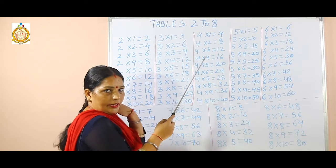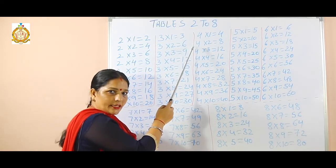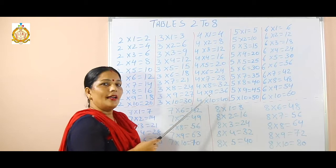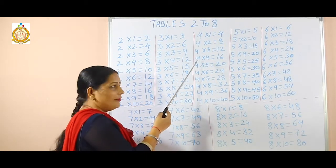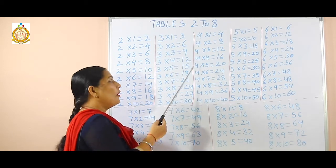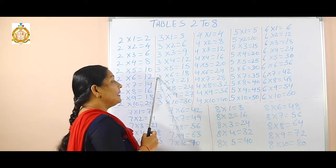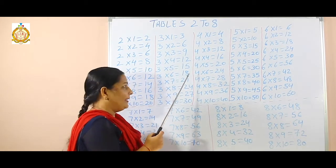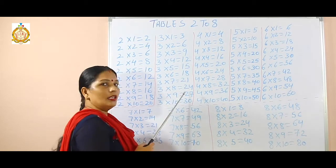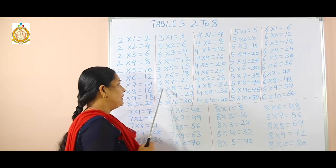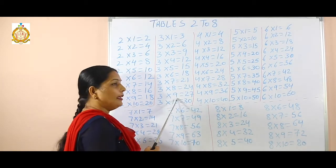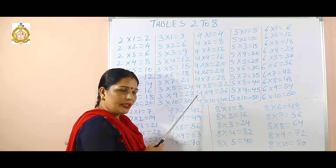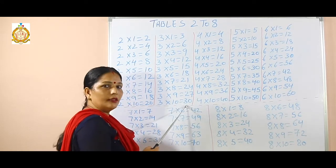3 twos are 6, 3 threes are 9, 3 fours are 12, 3 fives are 15, 3 sixes are 18, 3 sevens are 21, 3 eights are 24, 3 nines are 27, 3 tens are 30.